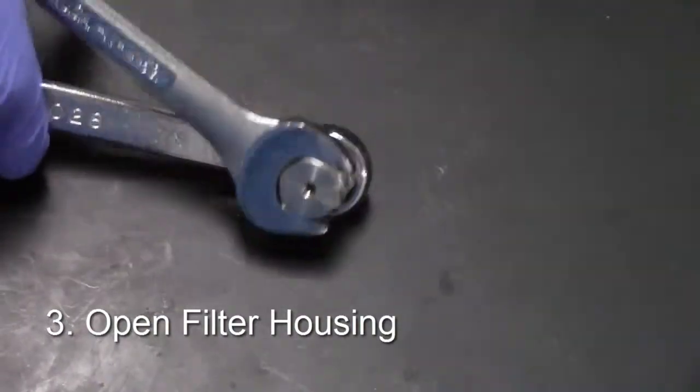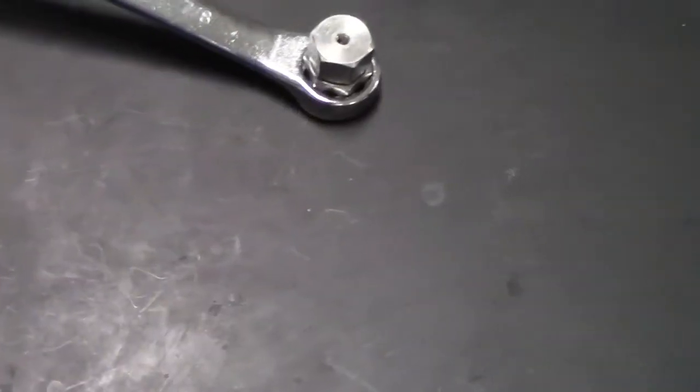Step 3. Open the filter housing. Using the wrenches, unscrew the two exterior housing components.